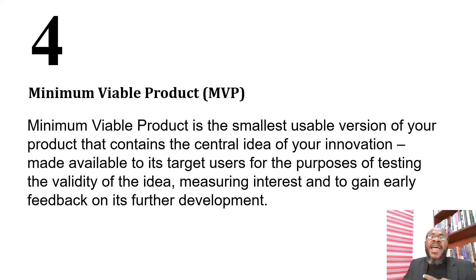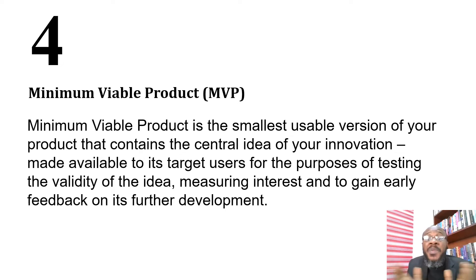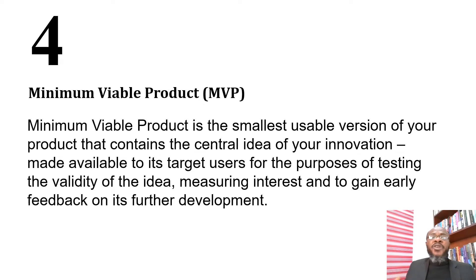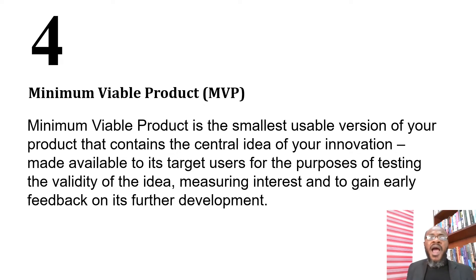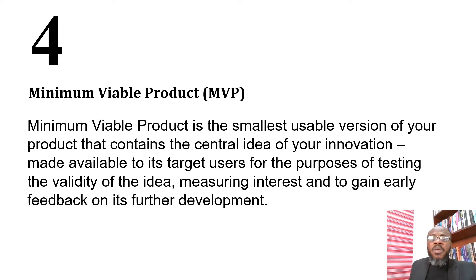The iteration happens between the project team and the marketplace, so the target users become a part of the development team — whether they are aware or not. Based on their feedback, we increment the solution; we use what they think, how they feel, and how best the product satisfies them to build it up. That is the minimum viable product.